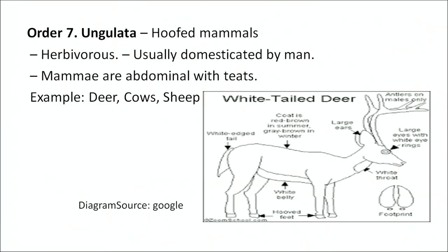The next order is Ungulata — these are hoofed mammals, herbivores, usually domesticated by man. They have mammary glands and are provided with teeth. Examples: deer, cows, and sheep.